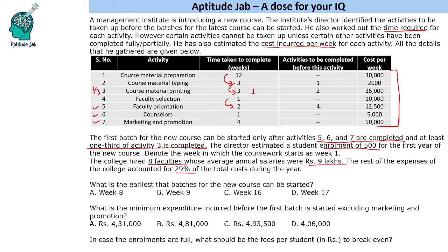The first question is: what is the earliest that batches for the new course can be started? We need to finish these 3 activities — 2, 1, 4 — that gives us 7 weeks. You might be tempted to answer week 8.